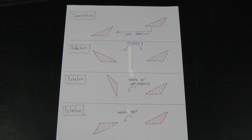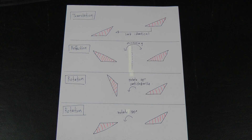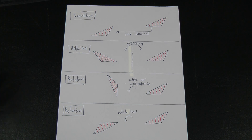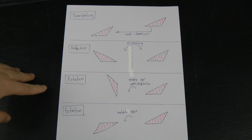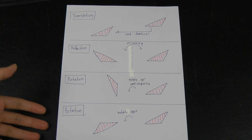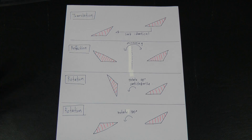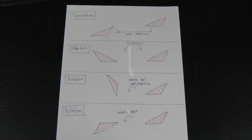This is the second video about combined transformation. I will continue to bring you more examples. I really hope you can understand about translation, reflection, rotation, and enlargement. Enlargement is very obvious — the object just becomes bigger or smaller.